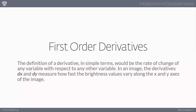In simplest terms, a derivative basically measures the rate of change of one variable with respect to another. The classic example is position of a particle over time — the derivative tells us how that position changes over time, which gives us velocity. In an image, we're looking at local changes in brightness values, so the derivatives dx and dy measure how fast brightness values change along the x and y axes of the image.